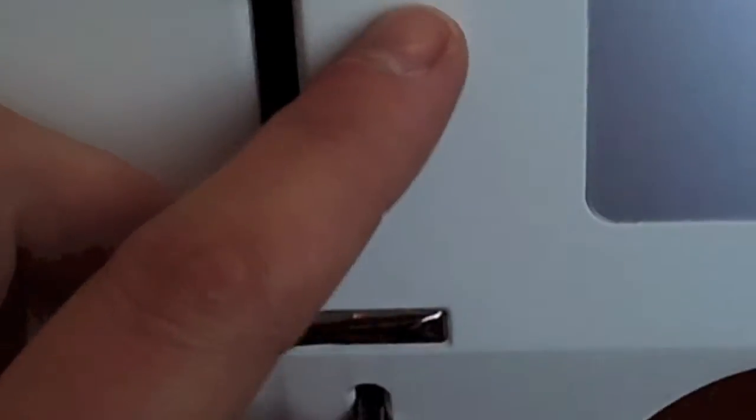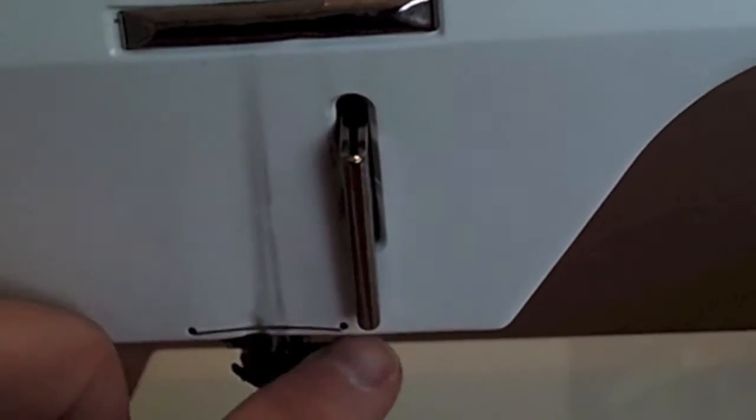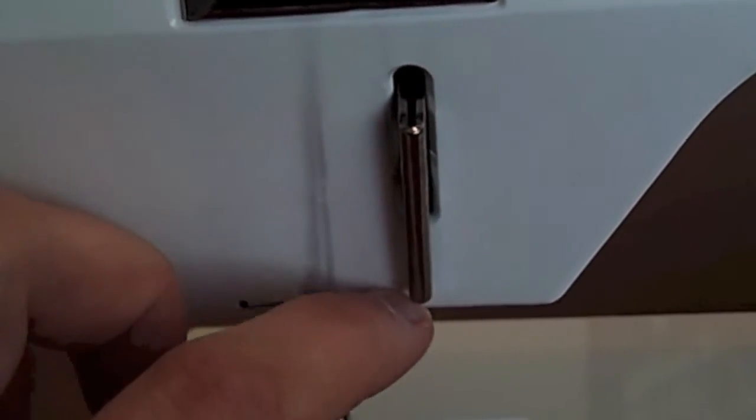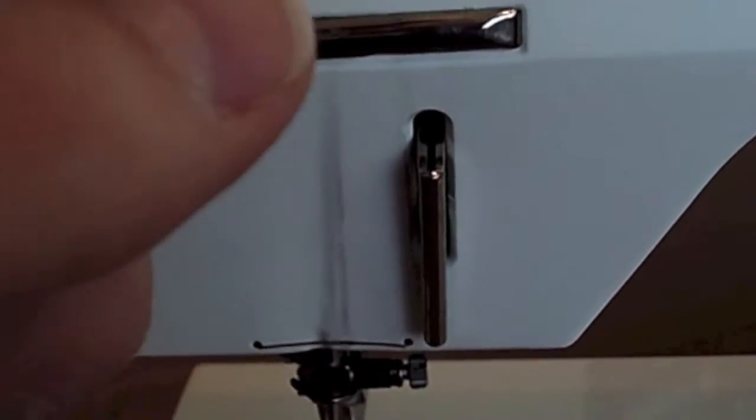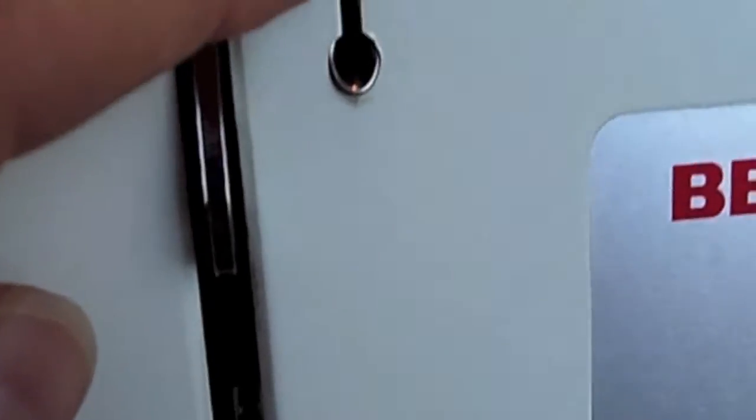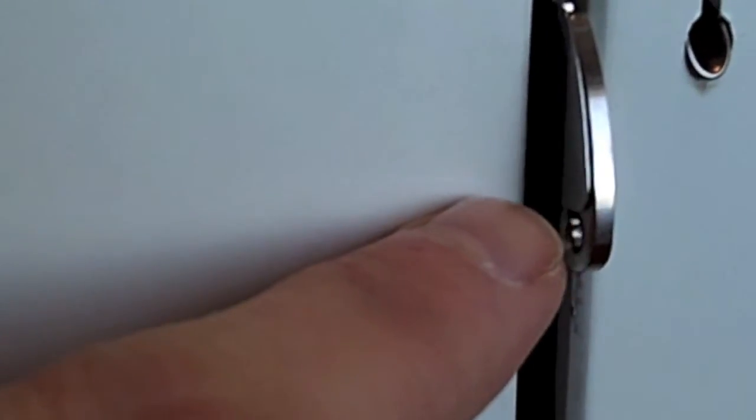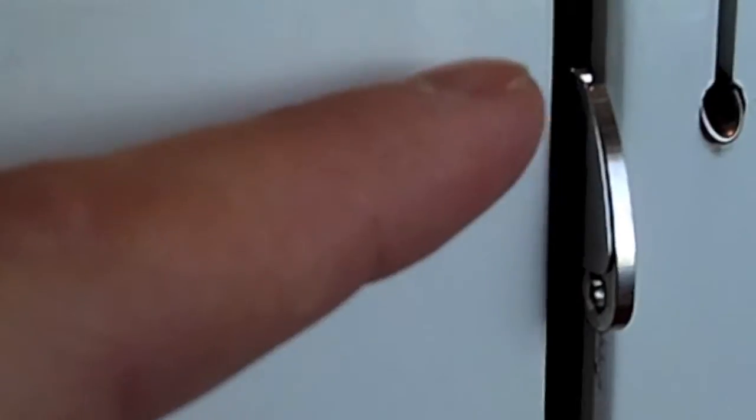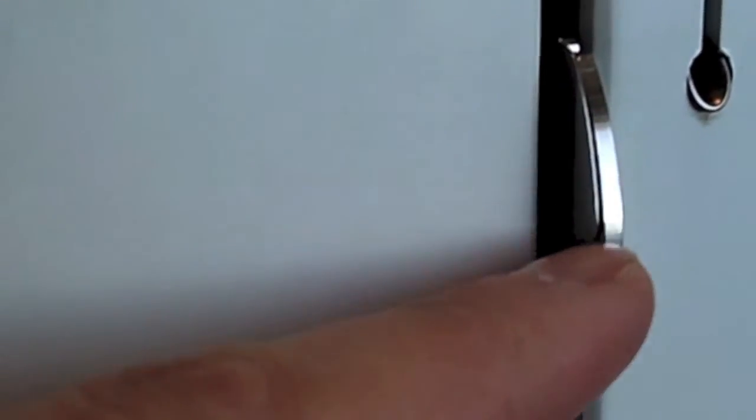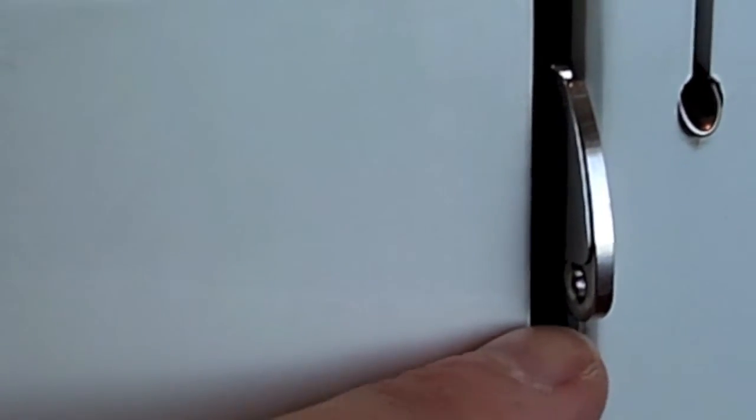Bring your thread down, there should be a thread guide here that you need to thread your thread under, and you bring it back up to the take-up lever. You'll see the take-up lever has a hole at the front there, so it's really important that your thread goes through the take-up lever and is sitting in the hole there properly.